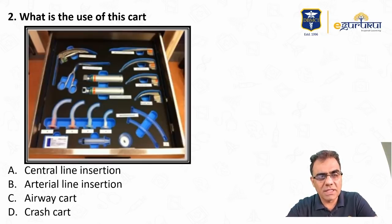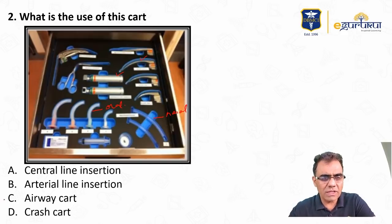Next question. What is the use of this cart? Central line insertion, ET line insertion, airway cart, crash cart. Again, very simple. Anyone who would have not studied anesthesia would have answered. It contains laryngoscope, all laryngoscope blades, all sizes, Miller blade, Macintosh blade, nasal airway, oral airway, Magill forcep. So this all set is obviously airway cart. Very simple, just a matter of common sense.